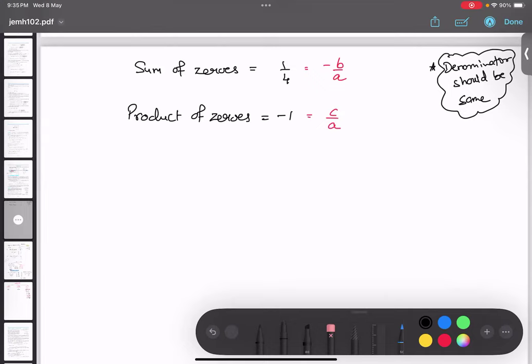Okay. If denominator is 1, perfect. I don't mind. But whatever is a denominator, it should be same. Otherwise, make it same. And if not, make it same using LCM. Okay. Easy. So, right now, what is the denominator in both the cases? In first case, the denominator is 4. In second case, the denominator is 1.